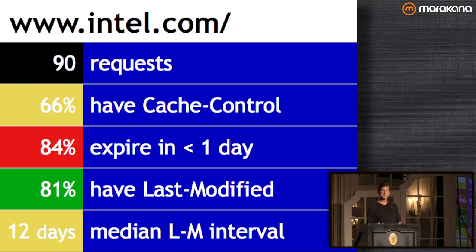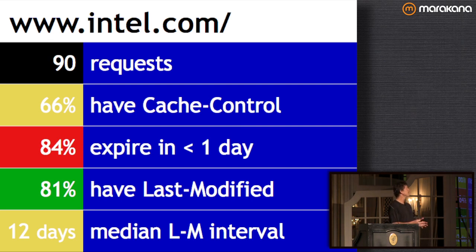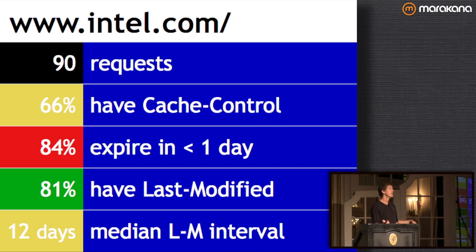Intel, the last speaker site: 90 resources, only 66% have a Cache-Control header, and 84% of those that specify a max-age expire in less than a day. There is a lot of churn in the resources, so they should be more explicit about what's cacheable and what's not. The median last-modified interval is about 12 days — 10% of that is one day — but if they're changing every 12 days on average, they could have specified a max-age of about a week.